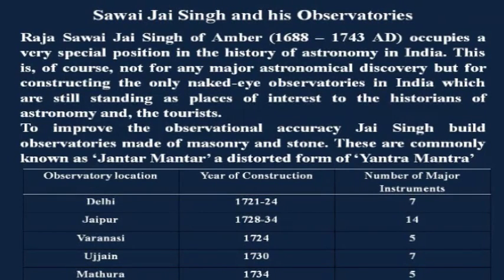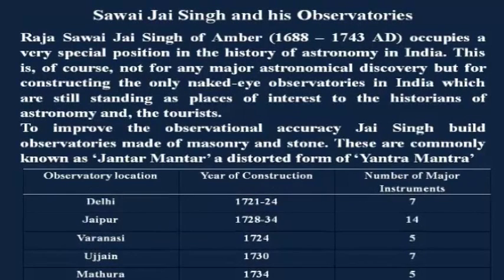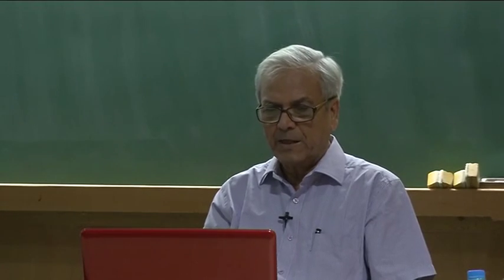These observatories are known as Jantar Mantar, originally called Yantra Mantra in Sanskrit. In Delhi it was constructed during 1721 to 1724 and has seven major instruments. In Jaipur, construction was from 1728 to 1734 with 14 major instruments. In Varanasi, 1724, there are five instruments. In Ujjain, 1730, there are seven instruments. In Mathura, 1734, there are five instruments.